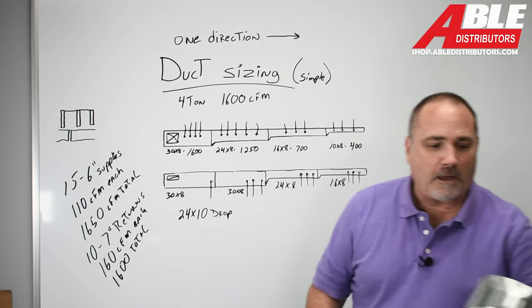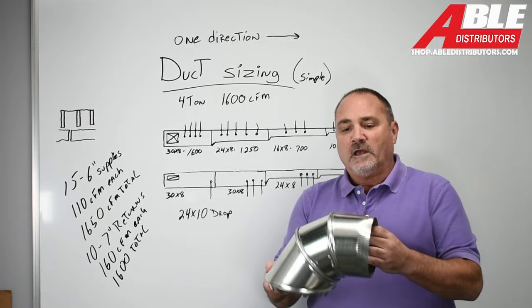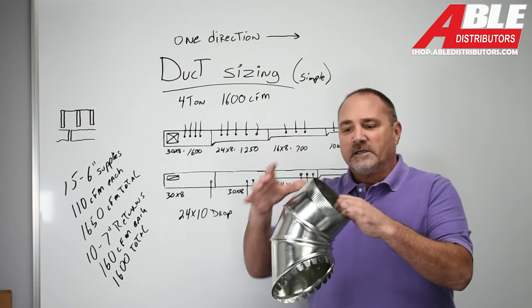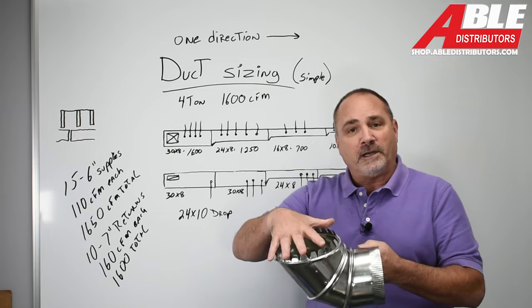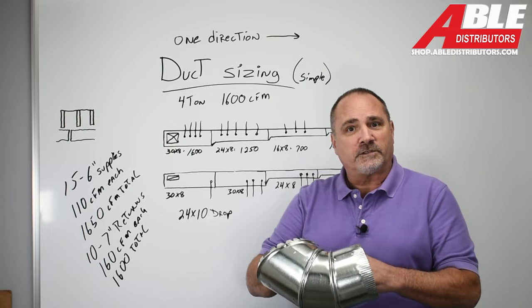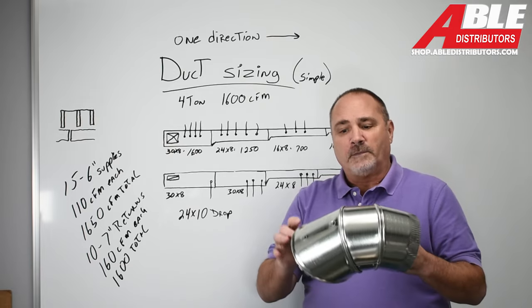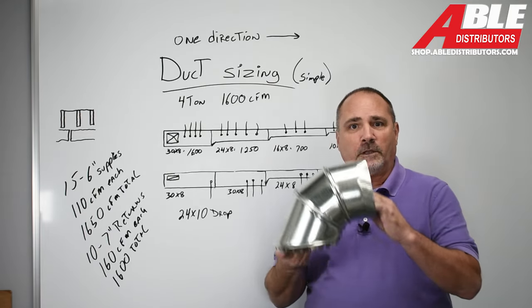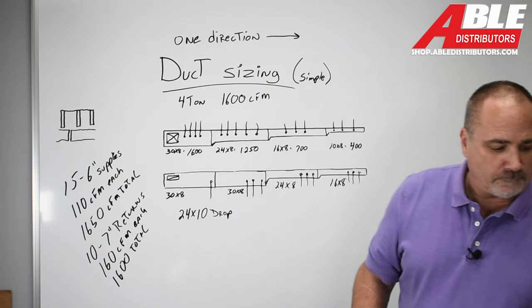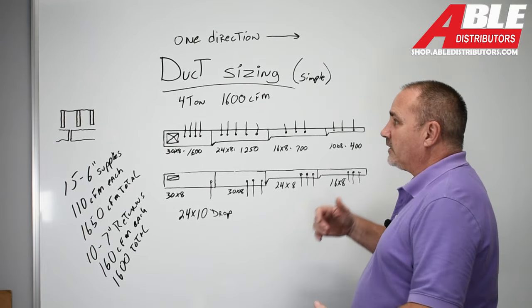When I talk about a takeoff, this is a typical adjustable top takeoff, six inches, but the opening is seven. It helps with the static. It helps with airflow. I'm not talking about just dovetailing an elbow in. I'm always talking about this type of a takeoff. So let's get started.